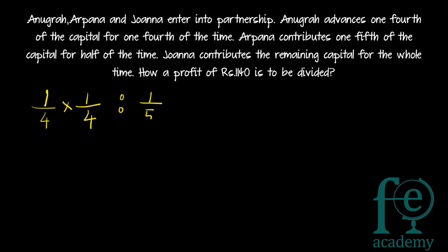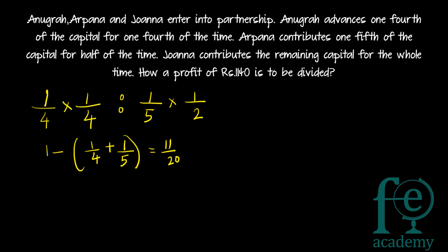Arpanna is contributing one-by-five of the capital for half of the time, so one-by-five into one-by-two will be the contribution of Arpanna. For Johanna it will be the remaining capital. One-fourth is contributed by Anigradh and one-fifth by Arpanna, so remaining capital will be one minus (one-by-four plus one-by-five), which equals one minus nine-by-twenty, giving eleven-by-twenty. So Johanna's capital contribution is eleven-by-twenty into one full year.